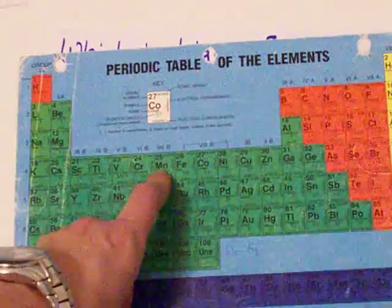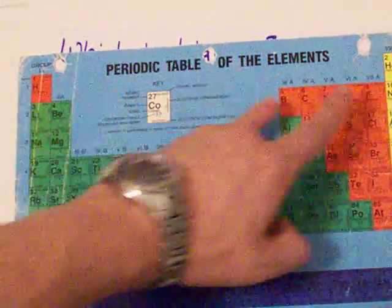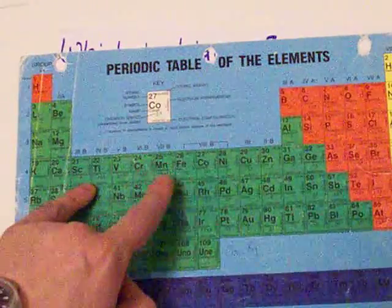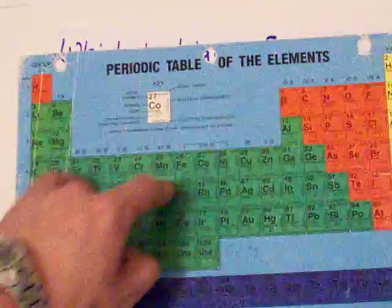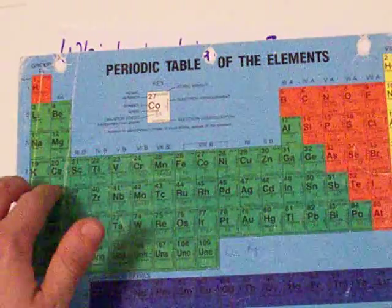when you take two electrons away from manganese, you end up with 1s2, 2s2, 2p6, 3s2, 3p6, 3d5. When you take two electrons away from manganese, you actually take them out of the 4s first.